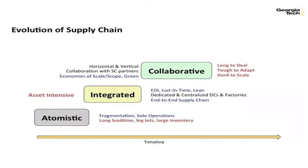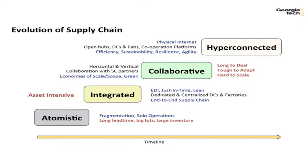Collaborative supply chains are those where organizations seek synergies through smart product design and sharing of some processes and infrastructure across channel partners within a common supply chain. Most companies are now in the integrated or collaborative stage of supply chain development. Looking into the future, we will see the emergence of much greater hyperconnected supply chains. These hyperconnected supply chains may be guided by the tenets of the physical Internet concept. Central to hyperconnectivity is the open sharing of transportation, warehousing, and manufacturing resources, among many other elements in the supply chain.